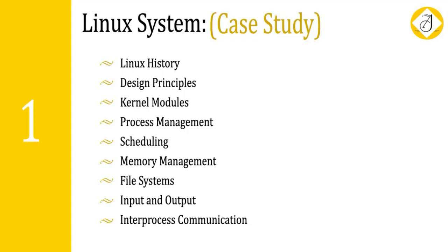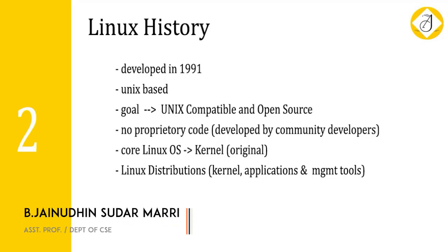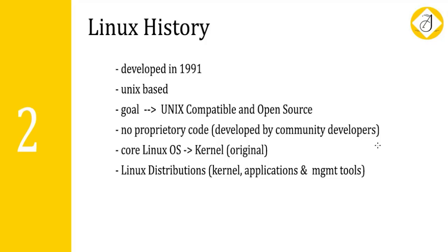Linux is a modern free operating system which derives from the earlier Unix version. Linux was developed in the year 1991 by Linus Torvalds. The main objective of this Linux operating system is to make sure that it is compatible with the Unix operating system. It has been released as open source, meaning the code is made available and developed by a large community of developers — it is a collaborative work.